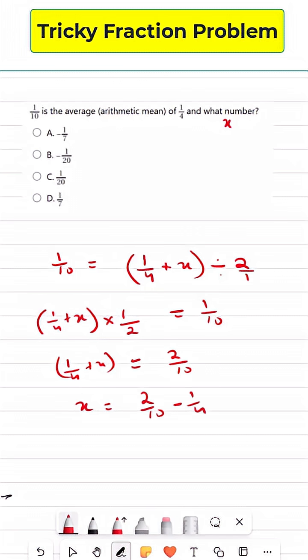Now the LCM of 10 and 4 is 20. So we can multiply this 4 by 5 and then we are going to multiply the numerator with 5 as well. And for this to get 20, we are just going to multiply it by 2, and the same thing here. So this just becomes 4 minus 5 is equal to minus 1 out of 20. So minus 1 out of 20, B is the right answer.